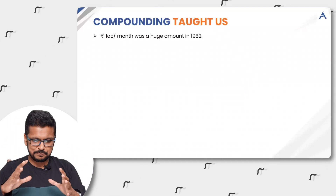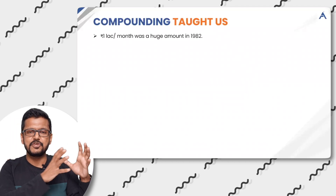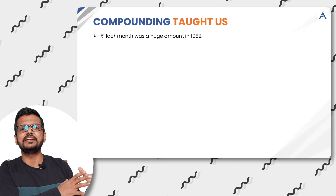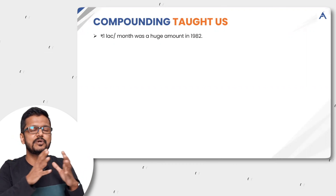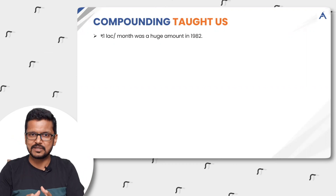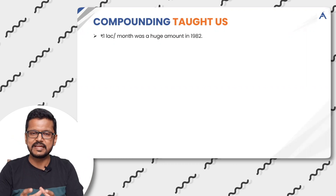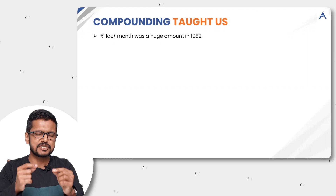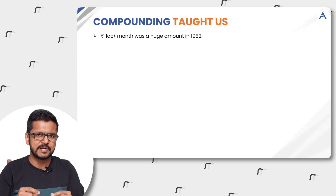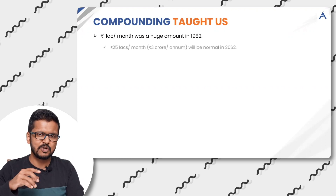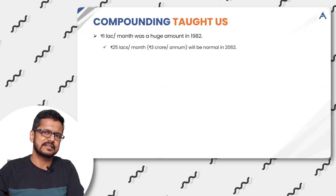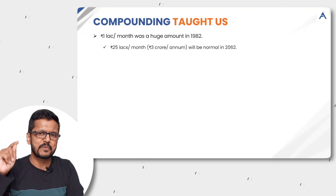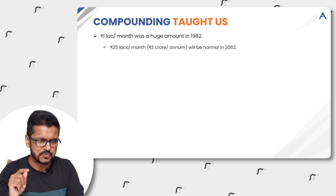So what has compounding taught us? 1 lakh per month looked huge in 1982. Today it is normal. Similarly, 25 lakhs per month looks huge today — it will look normal in 2062.